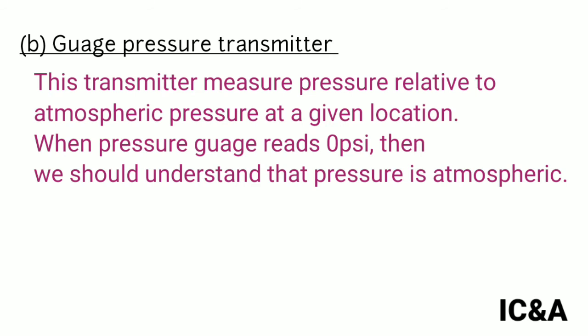Gauge pressure transmitter. This transmitter measures pressure relative to atmospheric pressure at a given location. When pressure gauge reads 0 psi, then we should understand the pressure is atmospheric pressure.